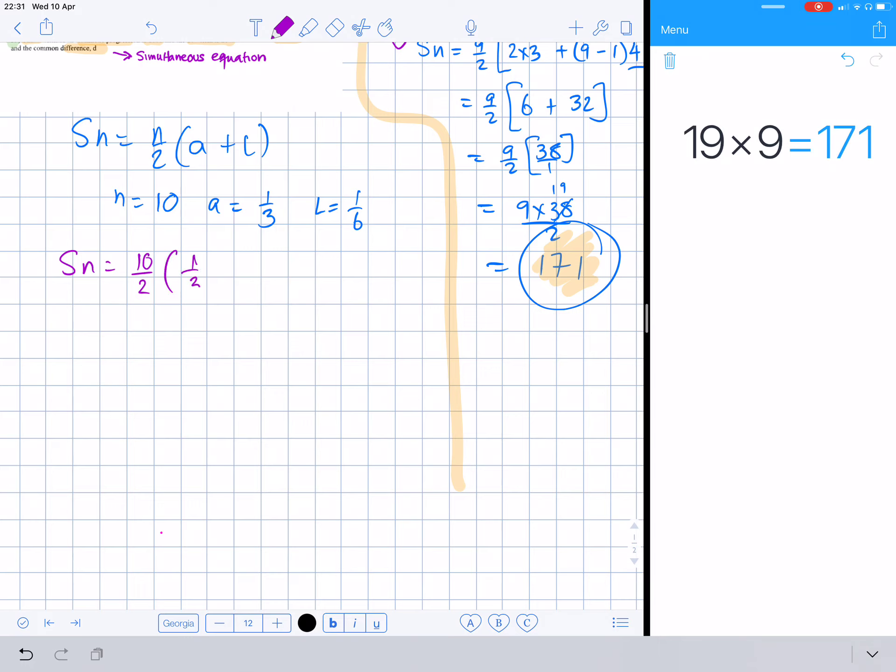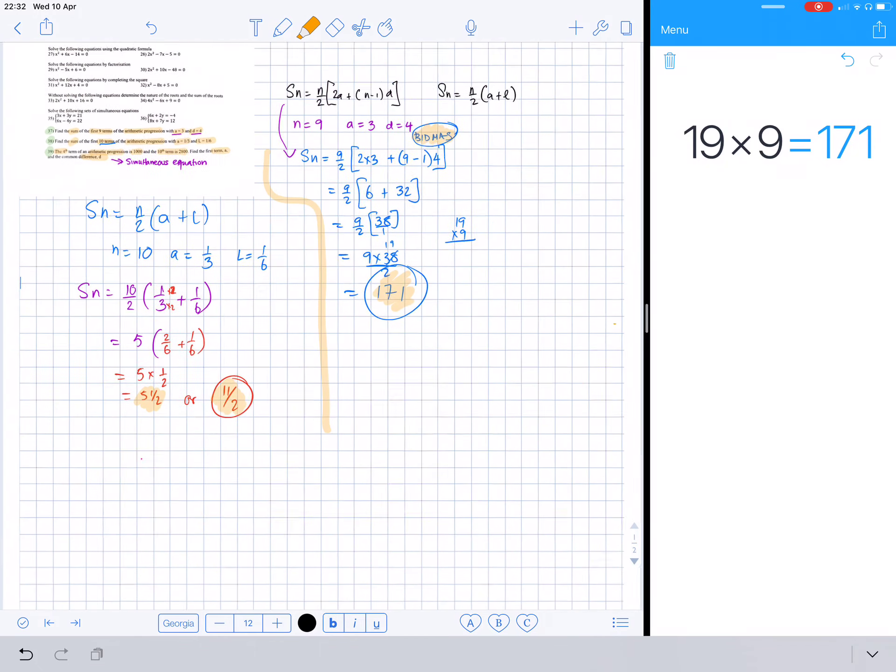So Sn equals n is 10 divided by 2, a is one third plus one sixth, which gives us 10 over 2 which is basically 5. Doing one third plus one sixth, we can multiply that by 2, so that becomes 6. Multiplying the top by 2 means 2 divided by 2 is 1, so nothing's changed. That becomes 2 sixths plus 1 sixth which is 3 sixths which is a half. So it's 5 times a half which is just 5 and a half or 11 over 2. So this is the sum for that series.